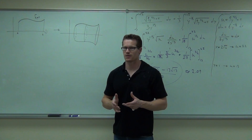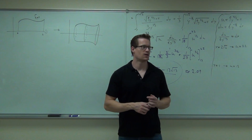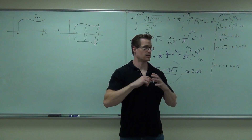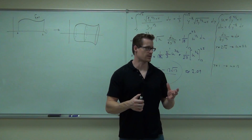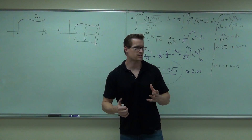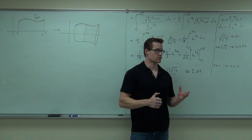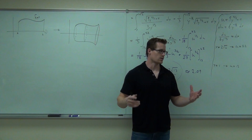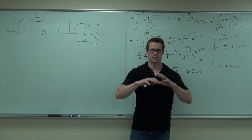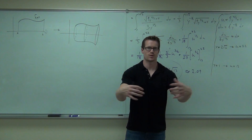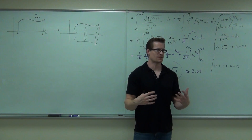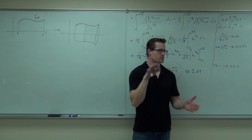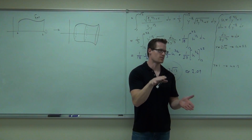The outside only. The inside we're going to consider to be solid. So it's a solid, but we're asking how much wrapping paper would it take — and you didn't have to cover the top and the bottom.